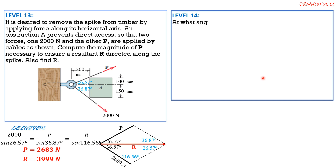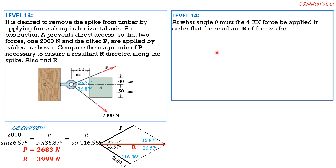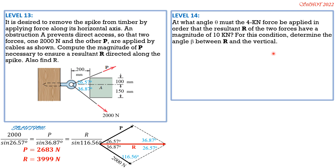Level 14: At what angle theta must the 4 kN force be applied so that the resultant R of the two forces has magnitude 10 kN? Also determine angle beta between R and the vertical. Note that so far all solutions use only cosine law, sine law, and triangle geometry. The next batch of problems will involve computing components and a vector approach for more methods.